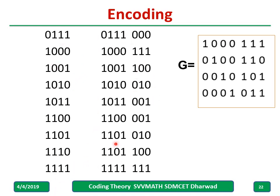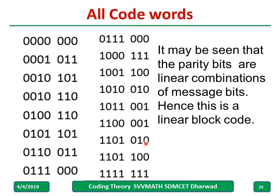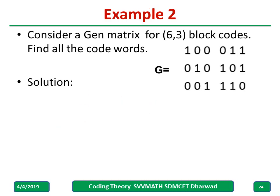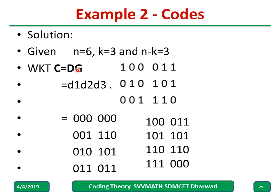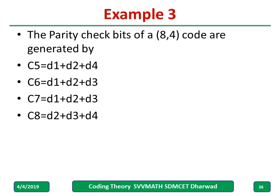Take another example: the generator matrix G is given for a block code — find all the code words. G is given, and we know c = d·G. In this case k=3, so d = d1 d2 d3 and we take all combinations from 000 to 111 and simply multiply with G, writing the answers. Pause here, solve it, and compare your answer.